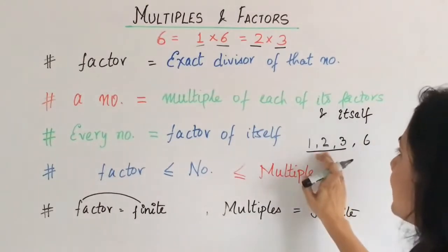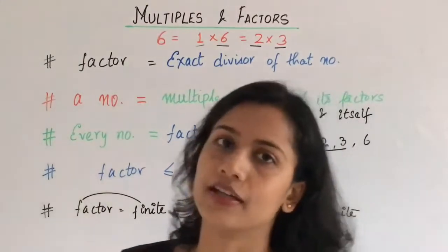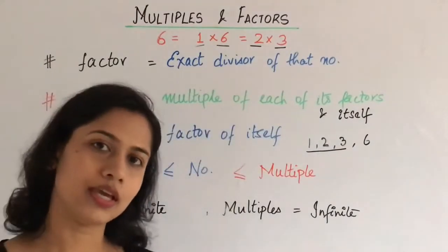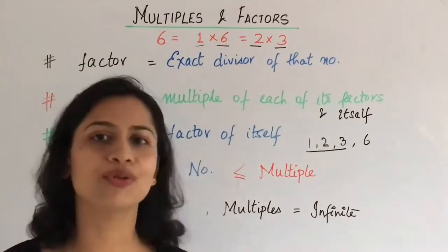The largest factor, 6, is equal to 6. Therefore, we can say, is ke kisi bhi number ke jitne bhi factors hongay, un sabhi ke value, us particular number se ya to choti hongi, ya uske barabar hongi, usse badhi nahi ho sakti hai.